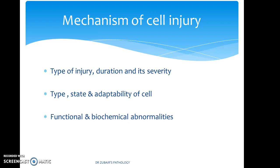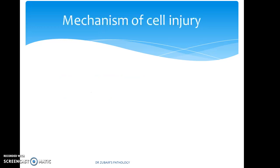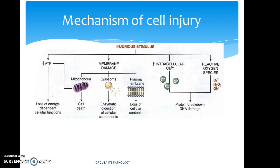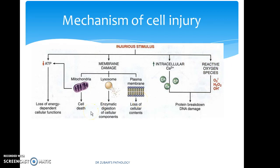Functional and biochemical abnormalities will constitute a major part of the discussion now. These are illustrated in this flow chart. You have injury stimuli causing a decrease in adenosine triphosphate, damage to the membrane, increase in intracellular calcium, and causing release of reactive oxygen species. Let us look at each of these at a closer level.